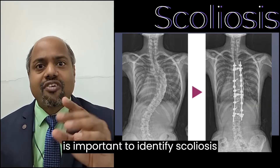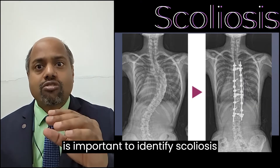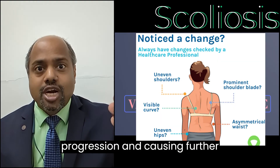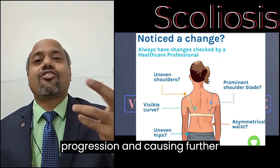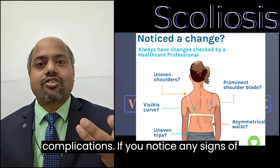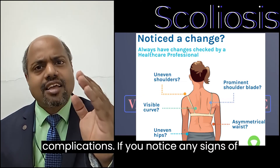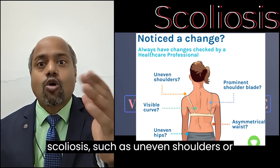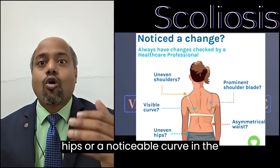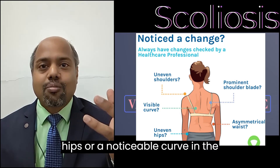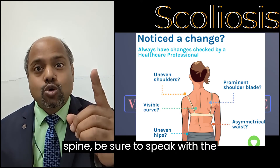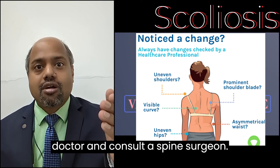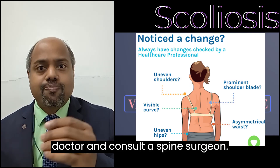It is important to identify scoliosis early on to prevent further progression and complications. If you notice any signs of scoliosis, such as uneven shoulders or hips, or a noticeable curve in the spine, be sure to speak with a doctor and consult a spine surgeon.